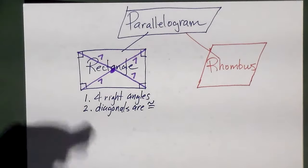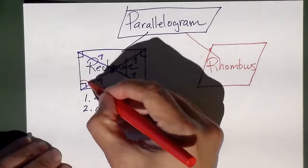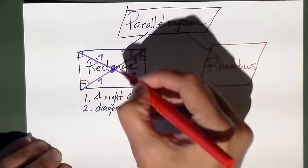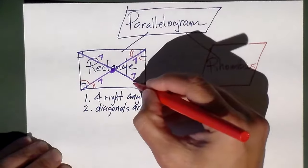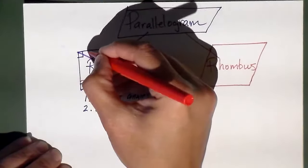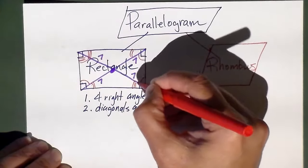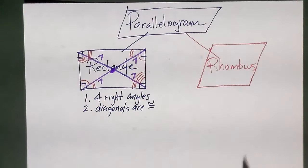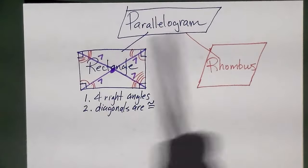A rectangle has all the characteristics of a parallelogram plus four right angles and congruent diagonals. Remember, as a parallelogram you still have alternate interior angles all over the place. But the difference in a rectangle is you've got four right angles and the diagonals are congruent.